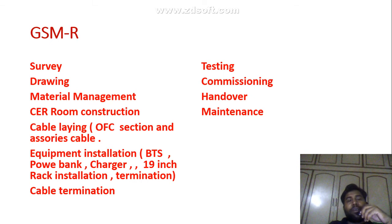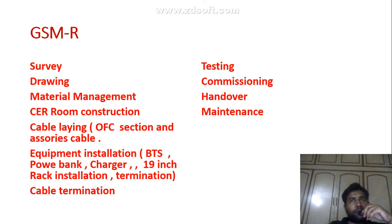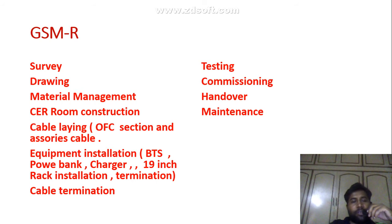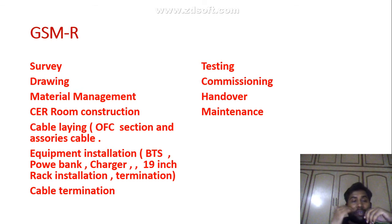When we do a project related to MTRC, GSM-R is mainly important because with the help of GSM-R we communicate and launch the MTRC system. When starting the MTRC system, the GSM-R installation process includes: first, survey; second, drawing; third, material management; fourth, CER room — meaning Communication Equipment Room — construction; and cable laying.